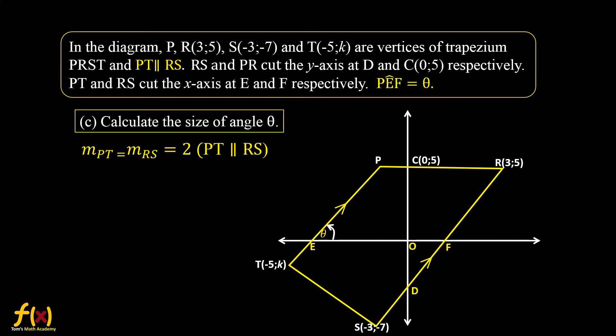We have already calculated the gradient. Therefore, we write tan(theta) = 2. Therefore, theta = arctan(2), which is 63.43 degrees.